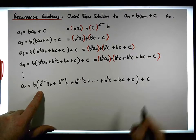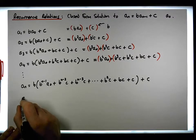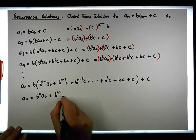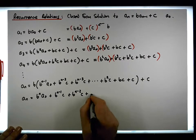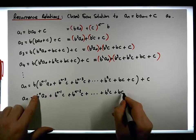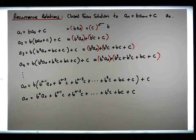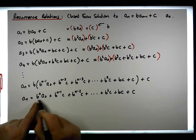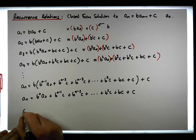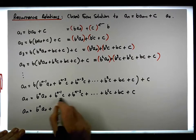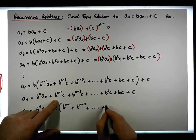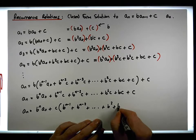When we expand this out, we end up with: a_n equals b to the n times a0, plus b to the n minus 1 times c, plus b to the n minus 2 times c, plus all the way down — b-cubed c, b-squared c, bc — plus the dangling c. We can break this into two groups and factor out the common c, giving us: a_n equals b to the n times a0, plus c times the quantity b to the n minus 1, plus b to the n minus 2, plus all the way down to b-squared, plus b, plus 1.